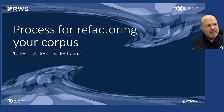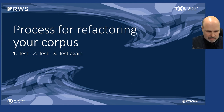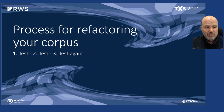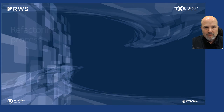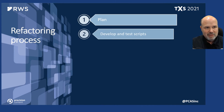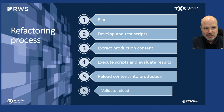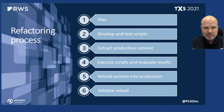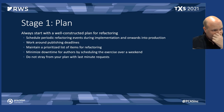Now let's walk through the overall process for refactoring your corpus. We have to be very careful and do rigorous testing each step of the way. The process typically looks like this: plan; develop and test scripts; extract production content; execute scripts and evaluate results; reload content into production; and then validate that reload.